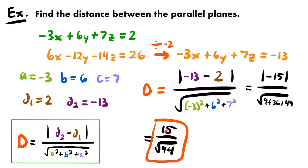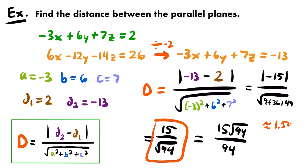If you want to rationalize, multiply by √94/√94 to get 15√94 / 94. Either way, the approximate value of the distance is about 1.547. That's the last example for finding the distance between two parallel planes. For our next example, we're going to look at a slightly different type of distance.